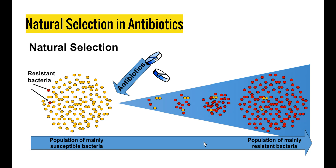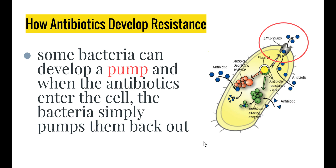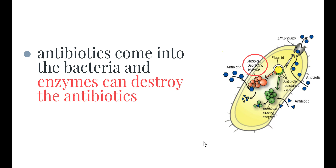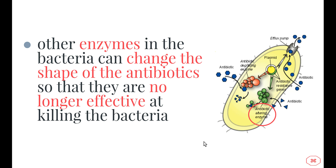So how do bacteria develop resistance? Resistance is due to mutations. Some bacteria can develop a pump, so when antibiotics enter the cell the bacteria simply pump them out in a constant cycle. Secondly, bacteria can produce enzymes that destroy the antibiotics, degrading them and making them useless. Lastly, other types of organisms can change the shape of antibiotics so they're no longer effective. This last mechanism will make more sense when we look at the immune response and see how antibiotics have a particular shape that works with particular bacteria.